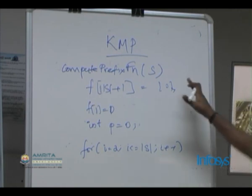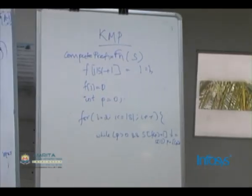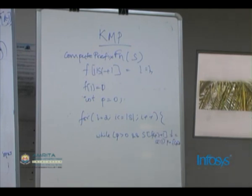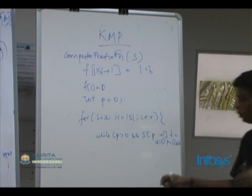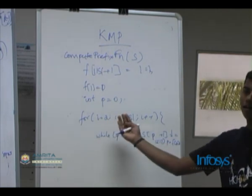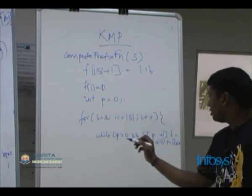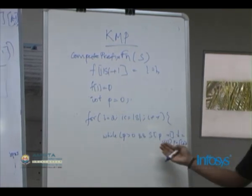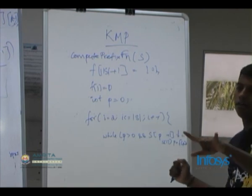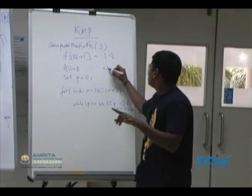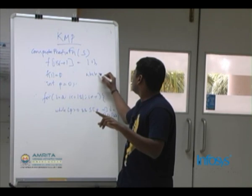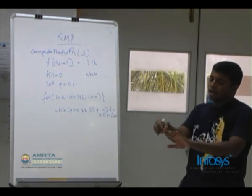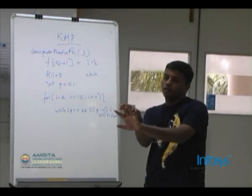A new character s[i] is coming in — how should p be modified? While p > 0 (a bound check), p denotes the longest prefix just before position i. If the next character after that prefix, s[p+1], equals s[i], I can simply increment p. If s[p+1] does not equal s[i], I must fall back: set p = f[p], that is, go to the longest prefix of the current prefix.